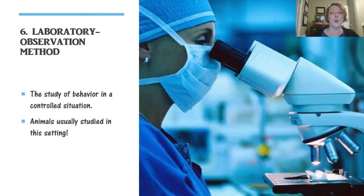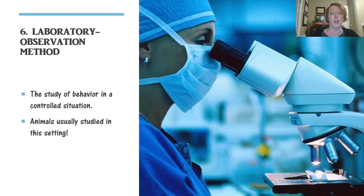Finally, we come to the laboratory observation method — studying behavior in a controlled situation. This would be bringing a group of children in to look at their language acquisition skills or social development. They're not in their natural environment, but in this way you can control when you see them, how you see them, and the amount of time you see them. Animals are usually studied in this setting — even a zoo is considered a place where laboratory observation can be done.